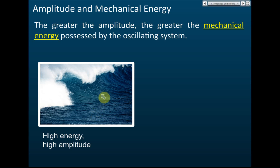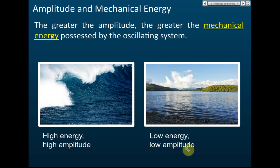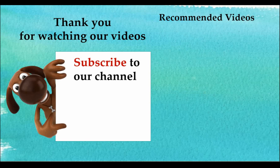In the exam, they may tell you that an object oscillates with a high amplitude and ask what you can deduce. High amplitude means high energy. We can also see a ripple here — a small water wave. That ripple has a small amplitude, and therefore the energy contained in it is also very low. So: high energy means high amplitude, low energy means low amplitude.